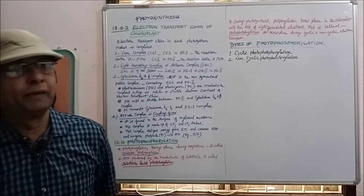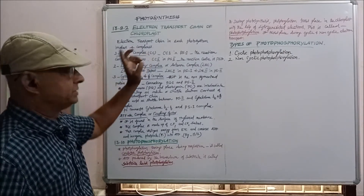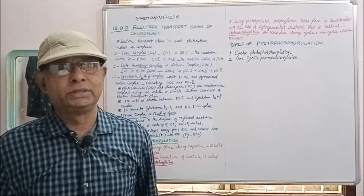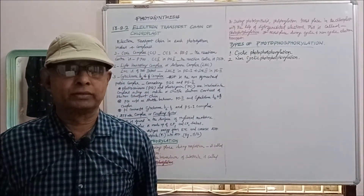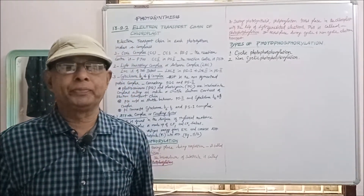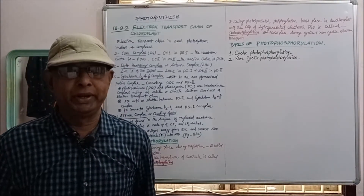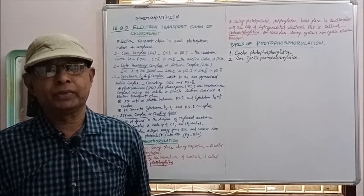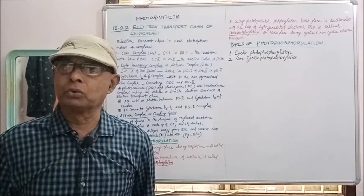One by one we will see. The first one is the core complex, referred to in short as CC. CC consists of CC1 and CC2. CC1 is in Photosystem I, where the reaction center is P700. CC2 is in Photosystem II, where the reaction center is P680. That is the core complex: Core Complex 1 and Core Complex 2.